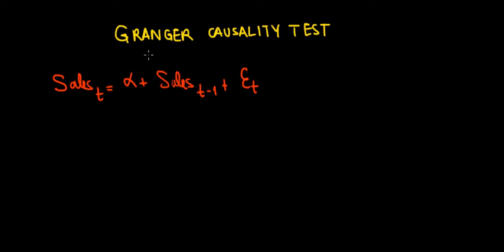Let's go through the topic of Granger causality test. Suppose we have our regular regression of sales based on the lagged values of sales — sales in the previous period affecting sales in the current period. Now what if we would like to see if another variable in the previous period is affecting our sales in the current period?